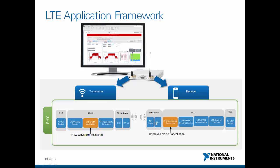On the receiver side, the signal is downconverted and converted to a digital signal. The RF impairments correction performs some corrections and provides the time domain signal. Then there is time and frequency synchronization to get the alignment of the signal at the receiver, so that OFDM demodulation can be used to demodulate the OFDM symbols, and the channel decoder decodes both the control and data channels. Finally, the decoded data is written to the host and provided as a UDP stream.